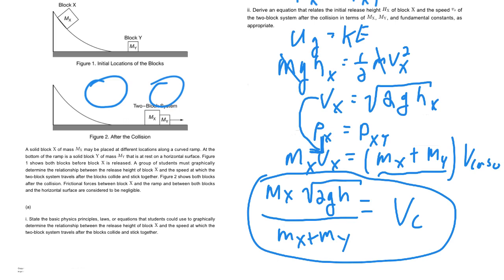As usual, whenever you do a derivation, you do want to make sure that the variables they ask for, so in this case MX, MY, fundamental constants are the variables you end up with. So if you look at our equation, we got MX, we got MY, G is a fundamental constant, and then of course H and V combo. Those were the variables you were looking for.